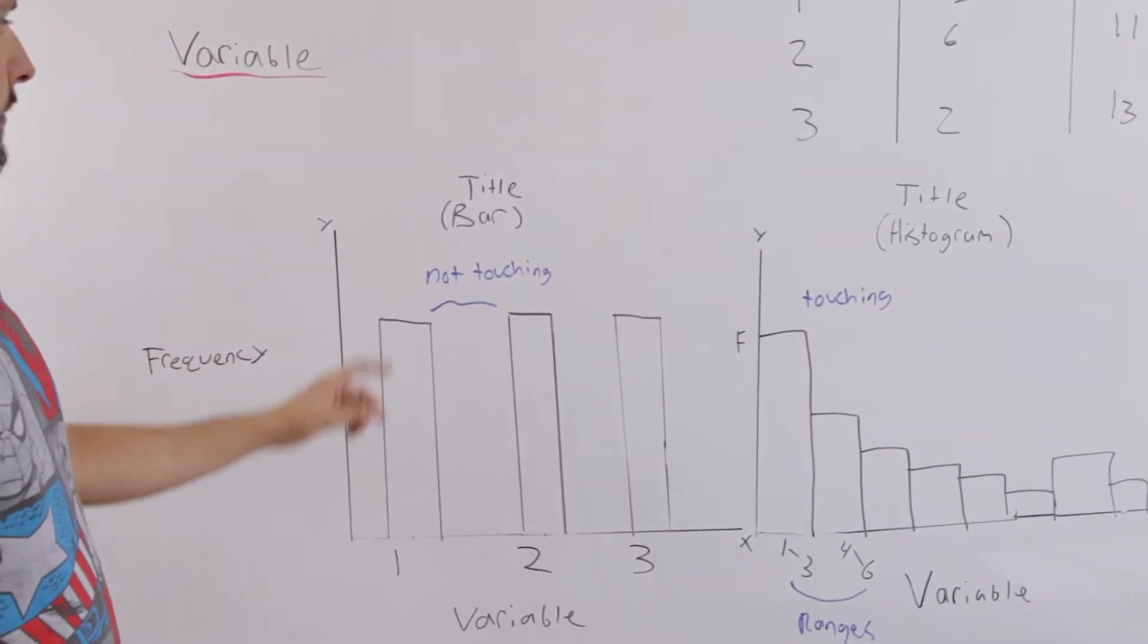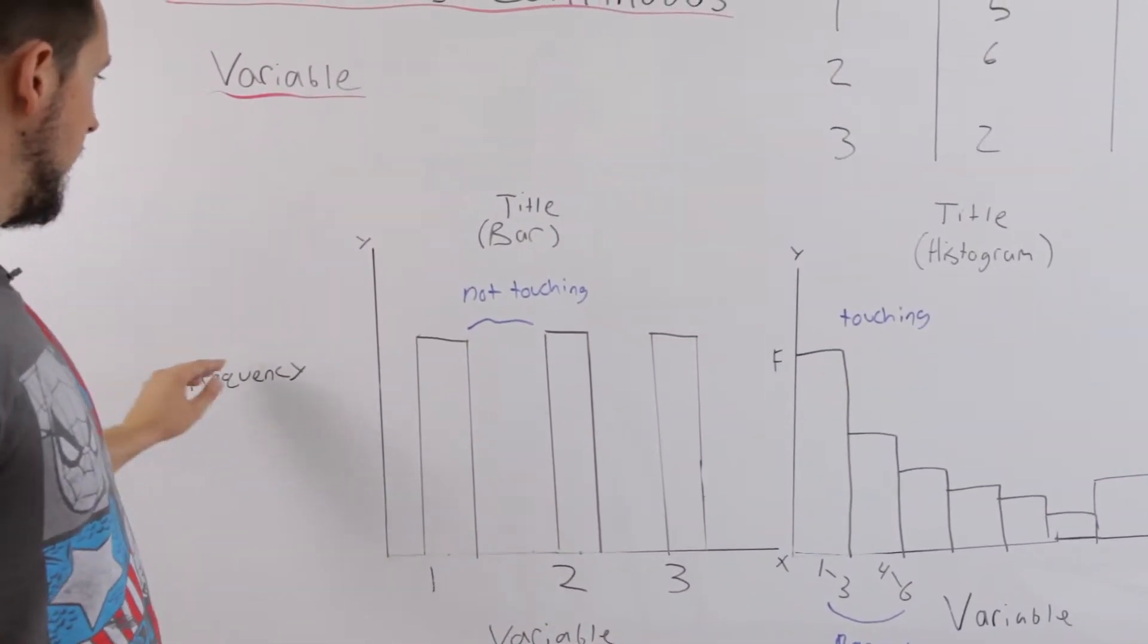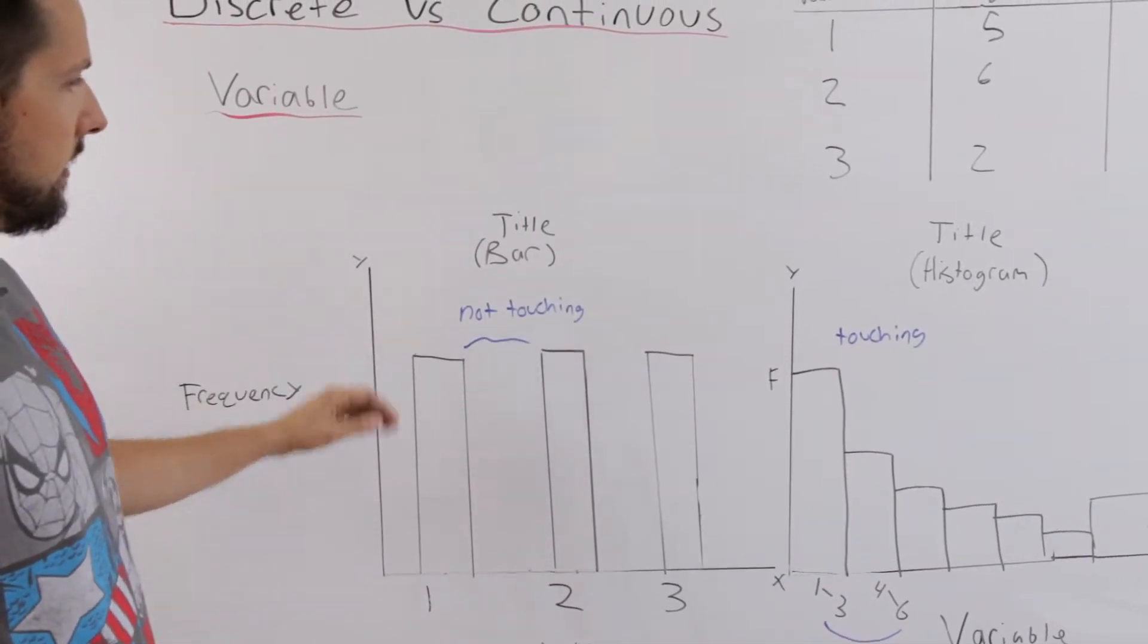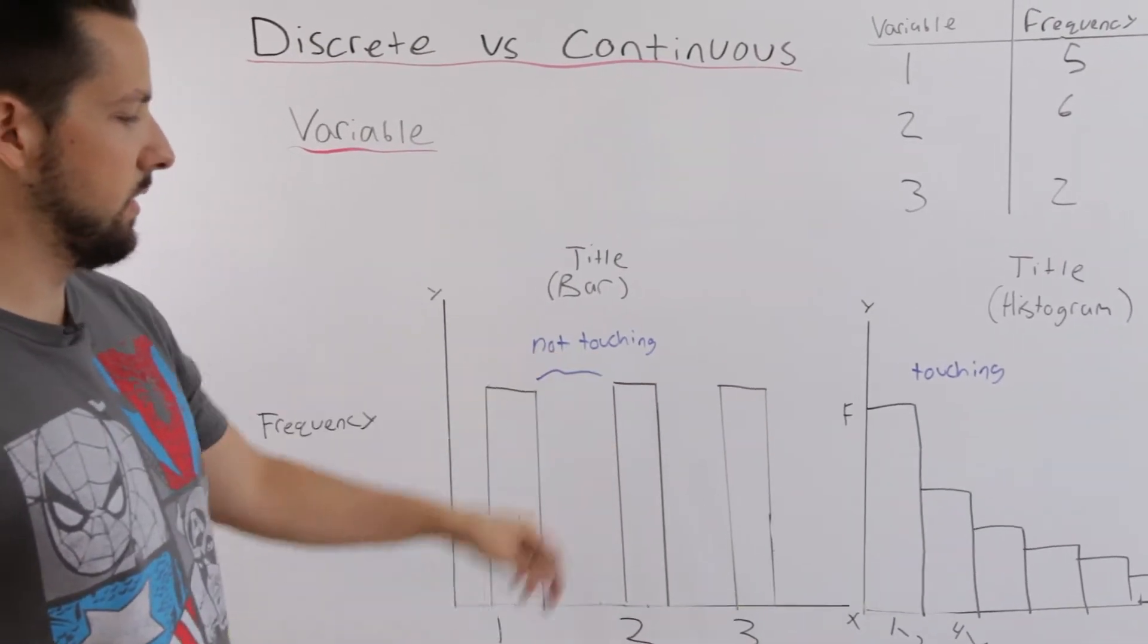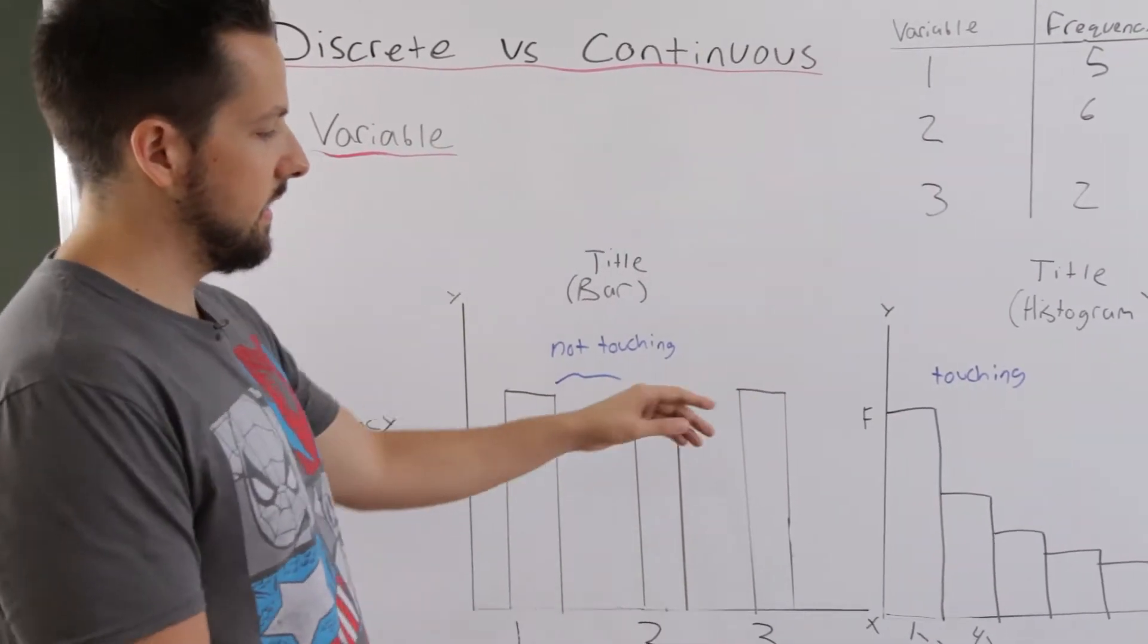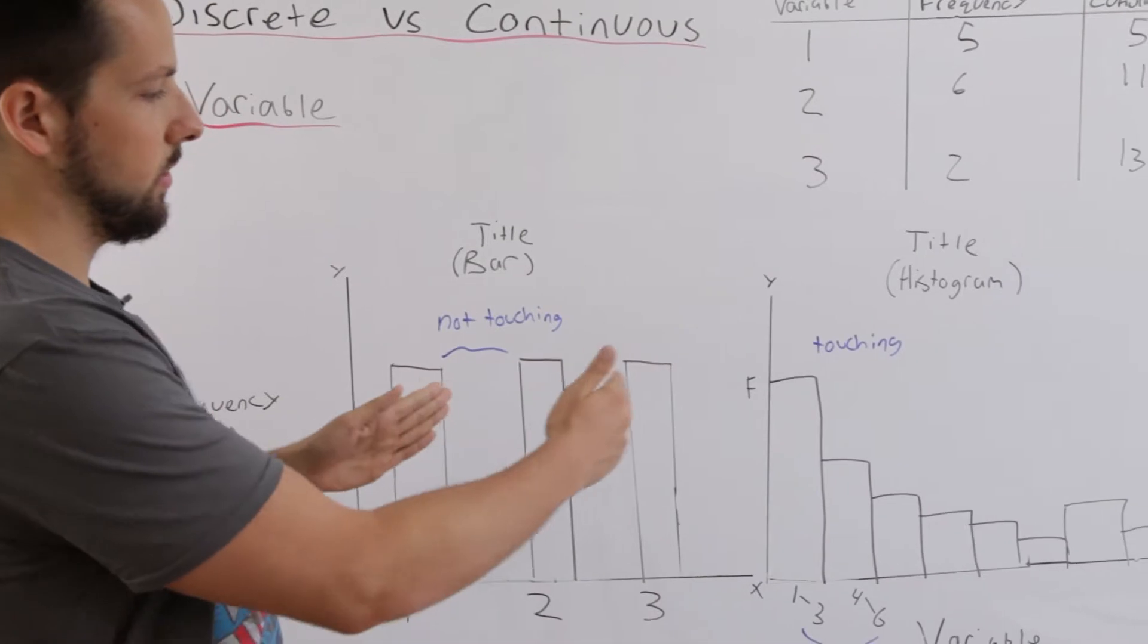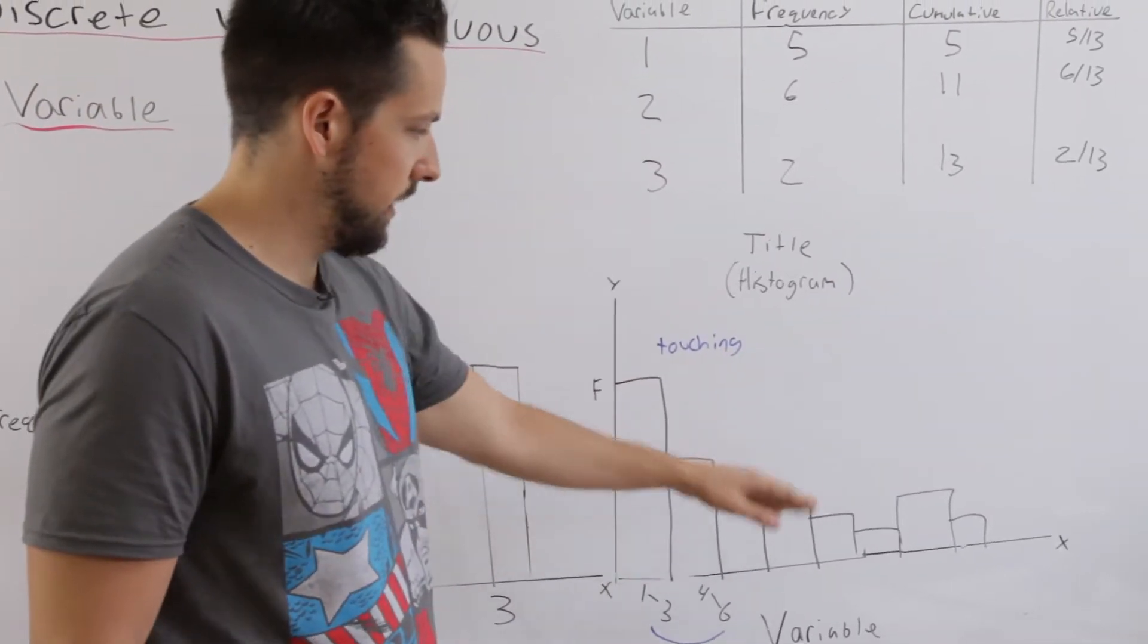Don't forget on your bar graph, you have a title, you label your axes and in a bar graph, the difference between a bar graph and a histogram is that the bars are not touching in this one. In a histogram, since it's a continuous variable, the bars are going to be touching with no space between each one.